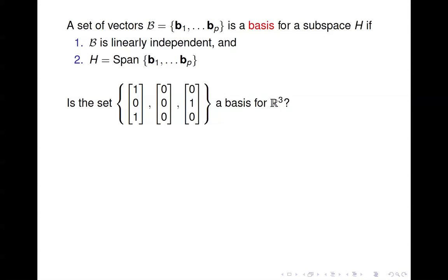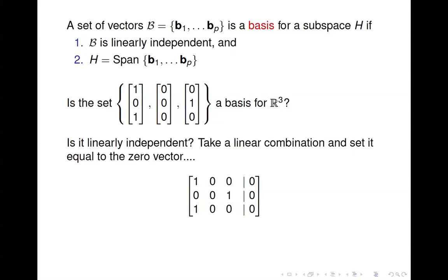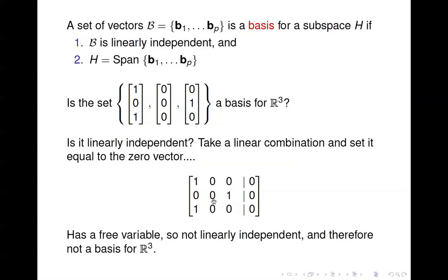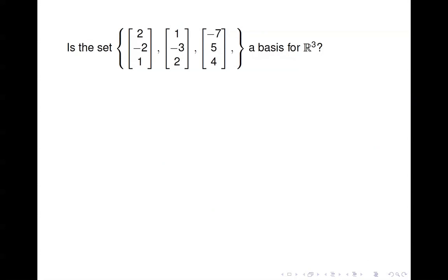Here's a set — is this a basis for R3? Pick one of the criteria and check it. Starting with linear independence: setting up the augmented matrix and setting it equal to zero, you can clearly see there's no pivot position in the second column, so it can't be linearly independent. Therefore it's not a basis.